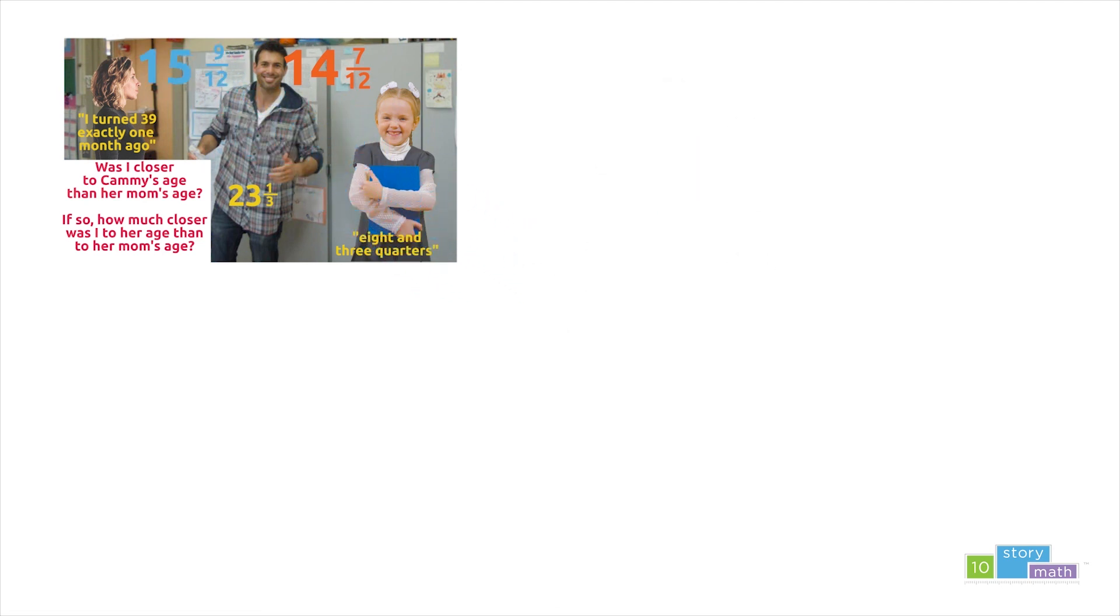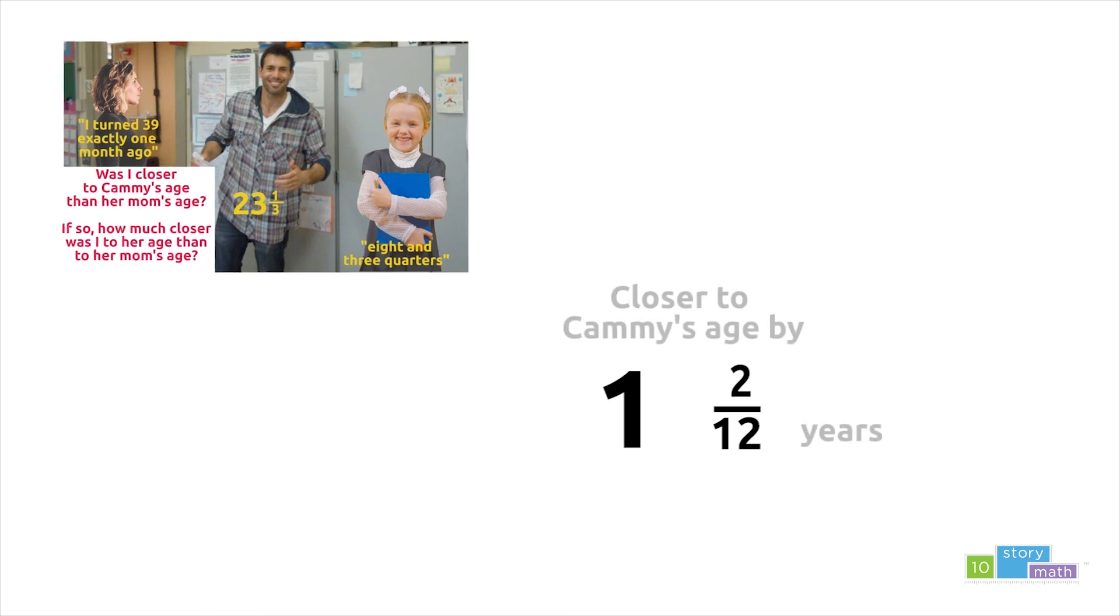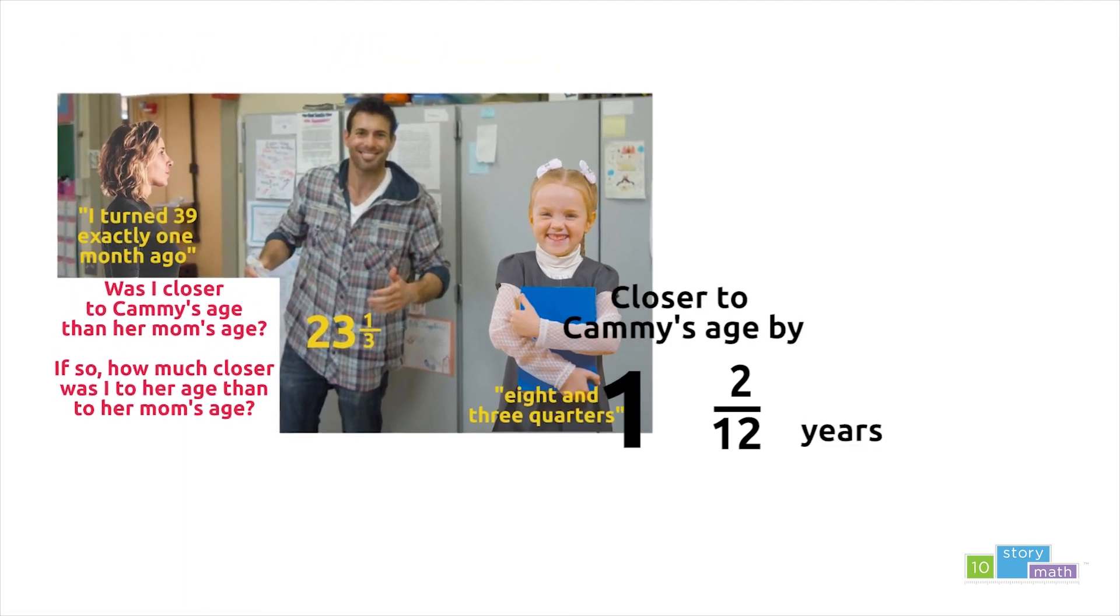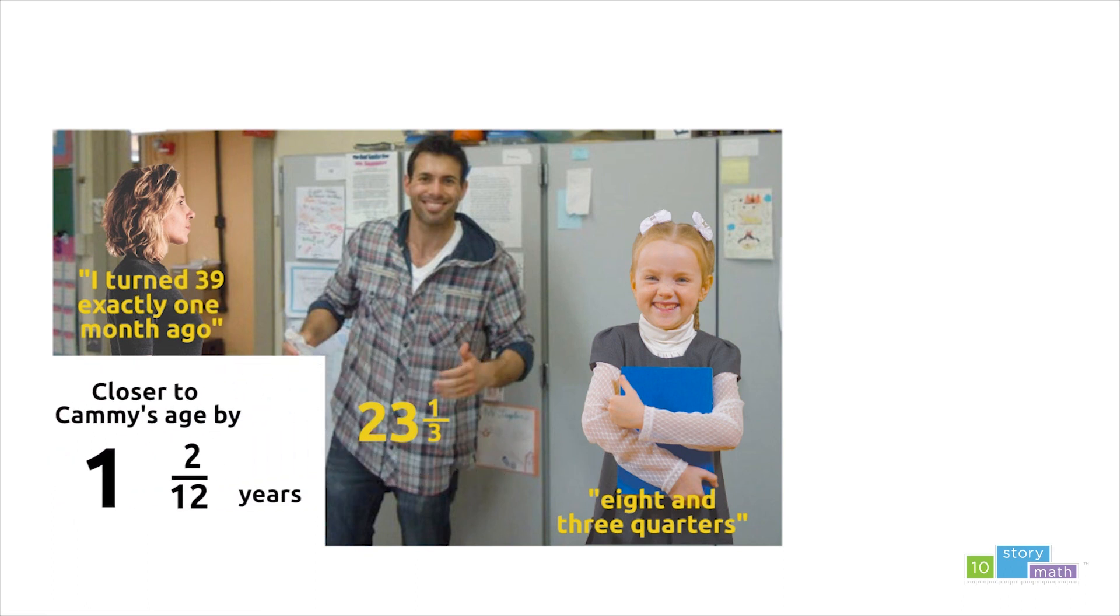So yes, it was true. I was closer in age to Cammie than I was to her mom. To find out how much closer I was to Cammie's age, I can subtract 14 and 7 twelfths from 15 and 9 twelfths. That means I was closer to Cammie's age by 1 and 2 twelfths years or 1 and 1 6th years.